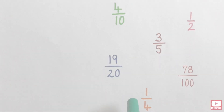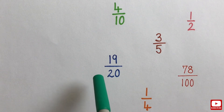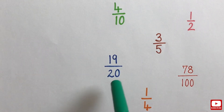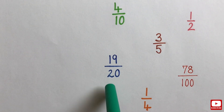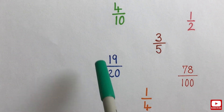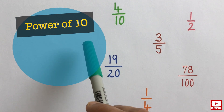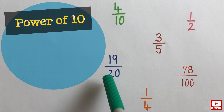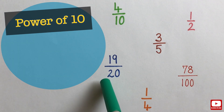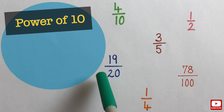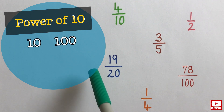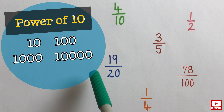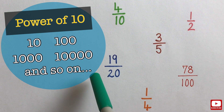To convert any fraction into its decimal form, we must first rewrite the fraction so that the denominator, or the bottom number, is a power of 10. This means we must try to convert the denominator into either 10, 100, 1000, 10000, and so on.